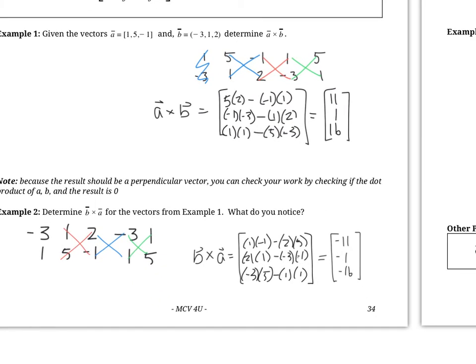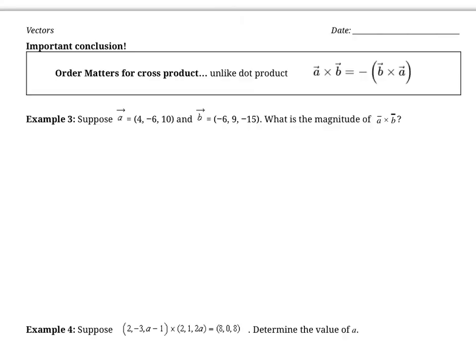And here's our important conclusion: order matters for cross product, unlike dot product. A cross B is equal to negative B cross A.